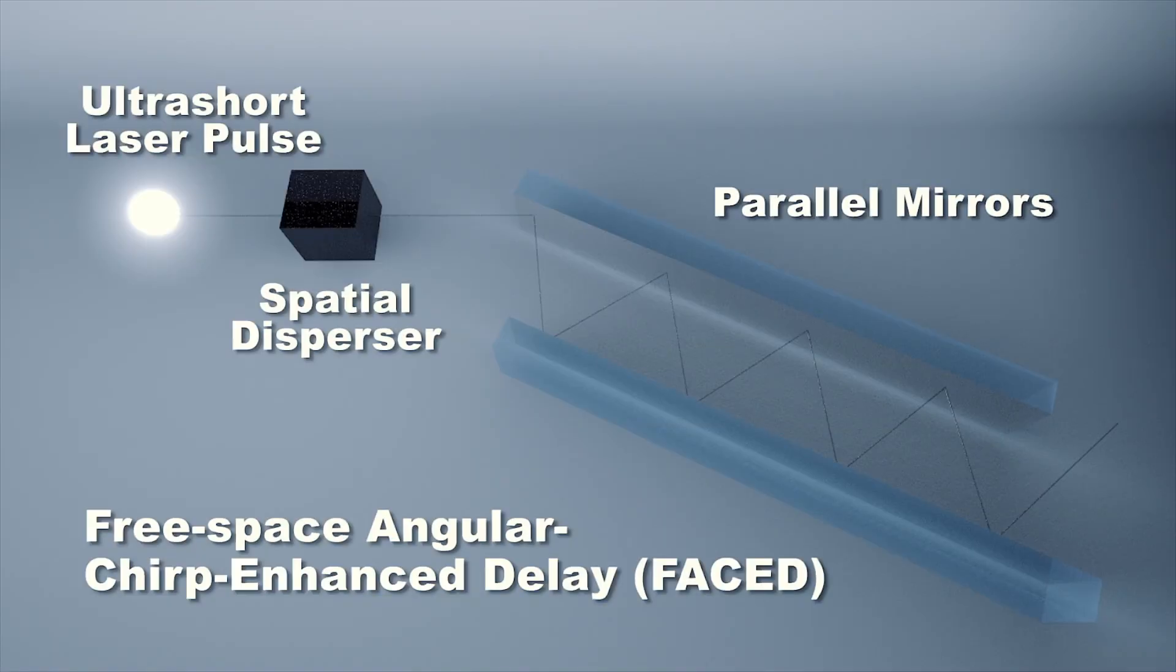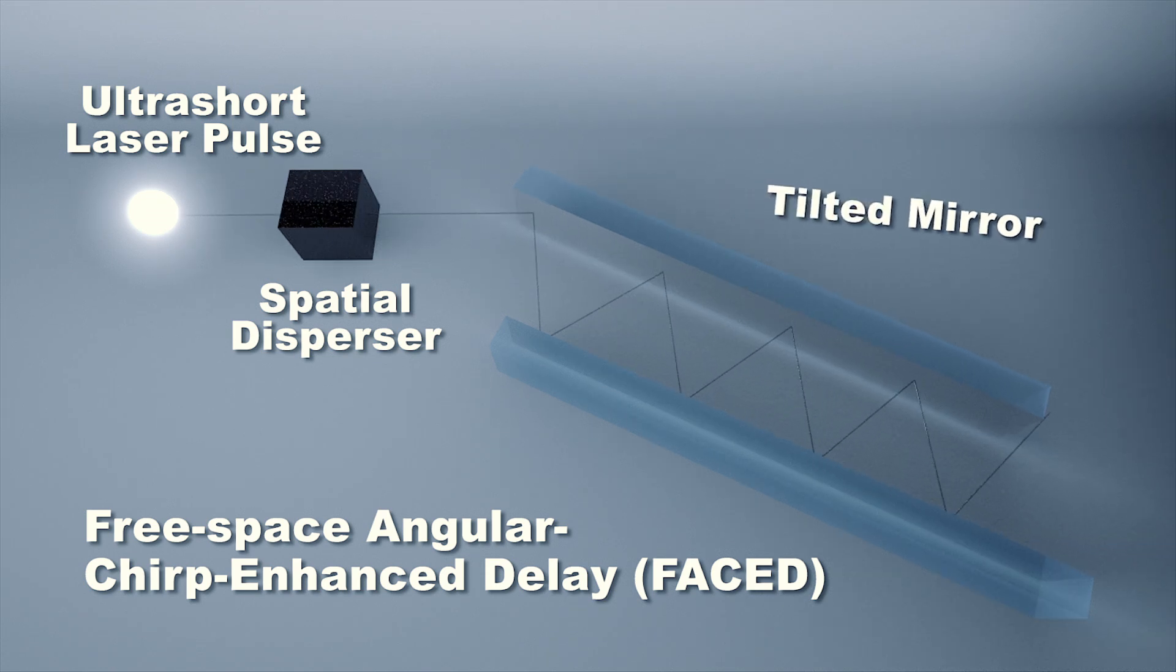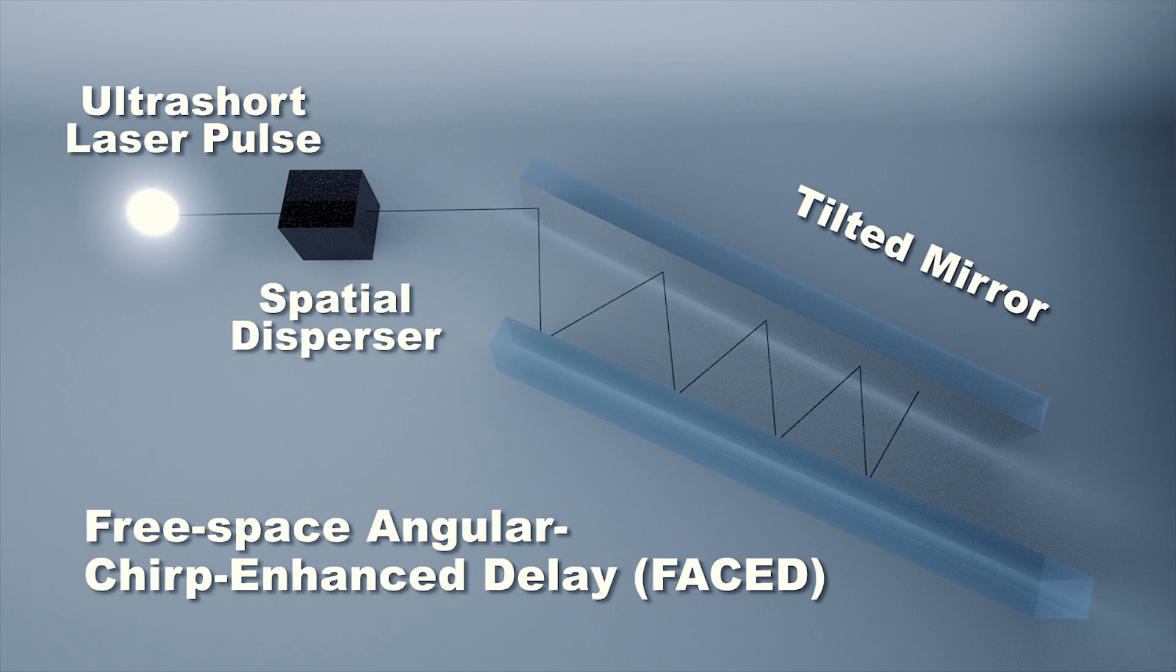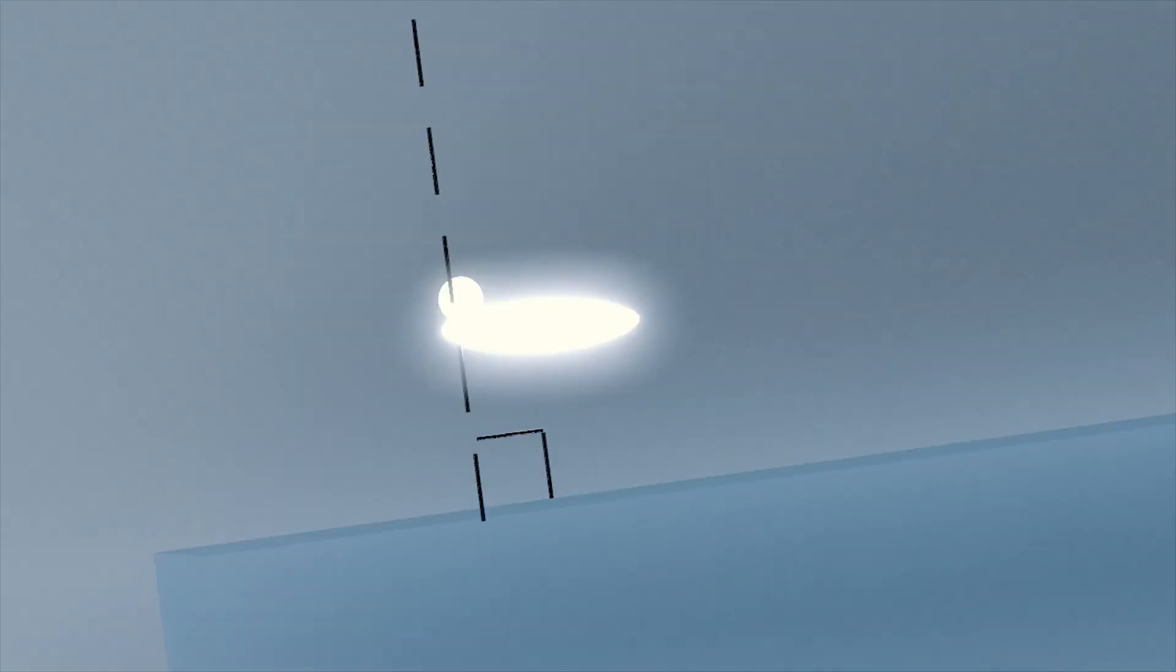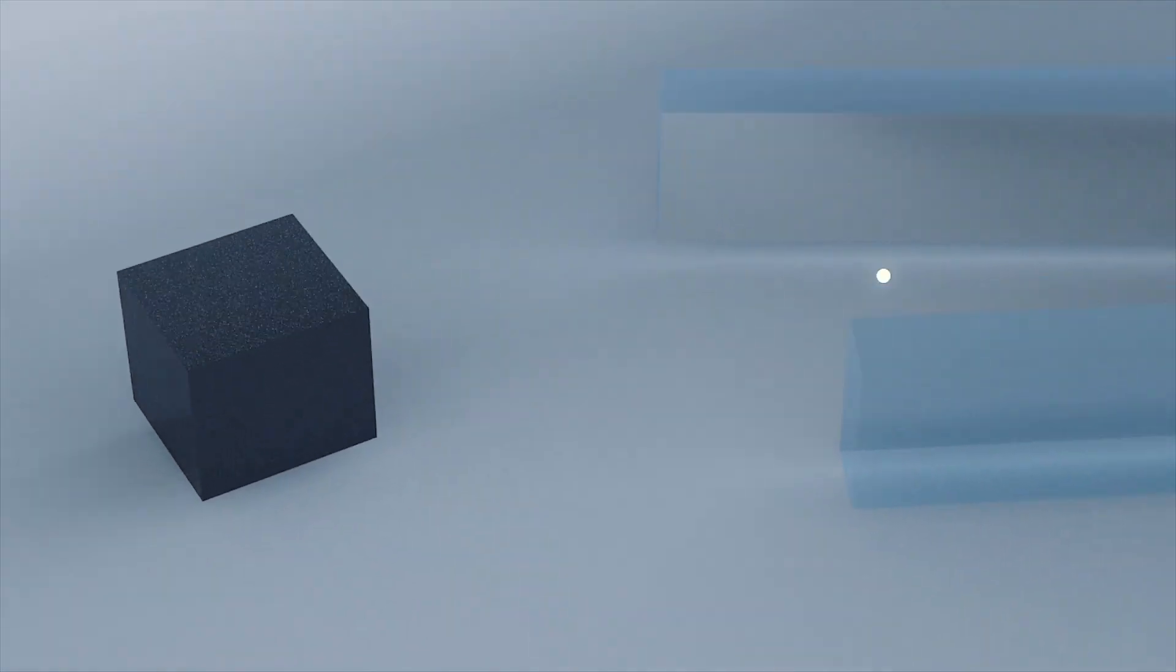At the heart of this new technique is the infinity mirror, a pair of parallel mirrors. One mirror is tilted with a tiny angle of 0.01 degrees. This mirror pair transforms an ultrashort laser pulse into many smaller pulses, bouncing between the mirrors and returning backward.